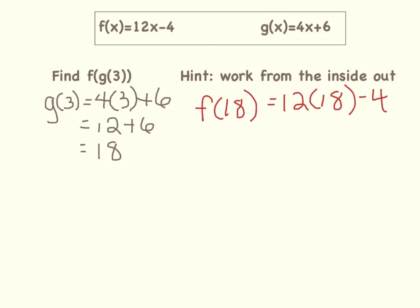Remember in our definition earlier, we said the output becomes the input, so the y becomes the new x. Now let's continue by simplifying: 12 times 18 is 216, so we have 216 minus 4, which is 212. So f(g(3)) = 212.